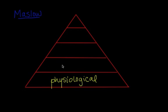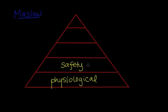The second level is our need for safety — safety of resources, safety of employment, safety in our health, and property. All of these are basic needs as well, but they can only be fulfilled when our physiological needs are fulfilled. We call these two levels the basic levels.